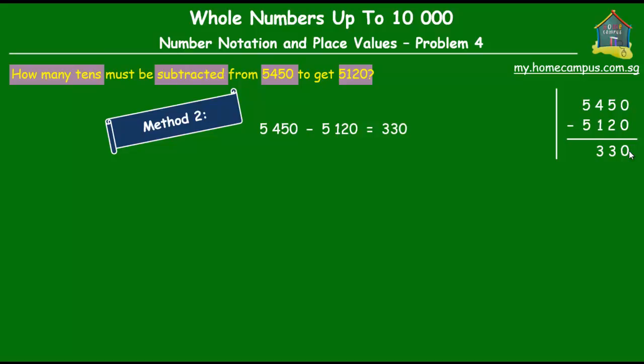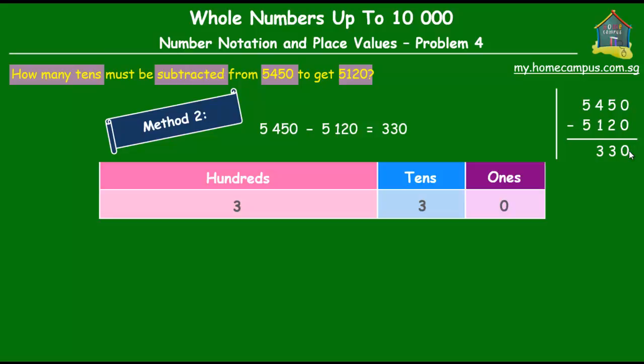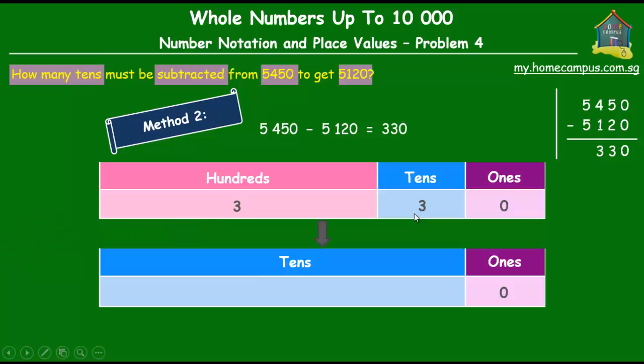Now, we have subtracted the two numbers. But, we know that we have to find out the answer in tens. Or, actually, we have to find out how many tens there are in 330. So, what we do is, we take our place value chart. Okay, and that's how you put the number 330 into it. And, then we know that 100 is equal to 10 tens. So, 3 hundreds would be equal to 30 tens. Now, the 30 tens from here and the 3 tens from here together, they give you 33 tens.